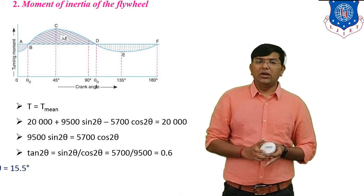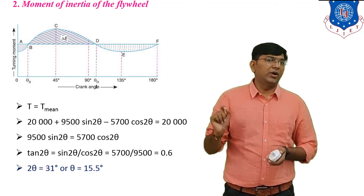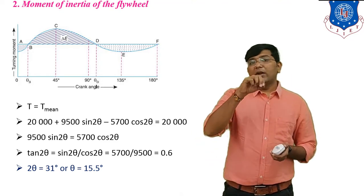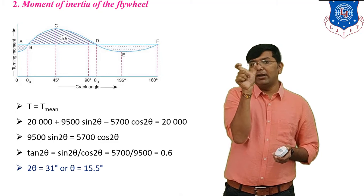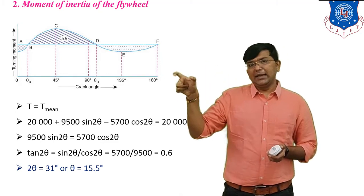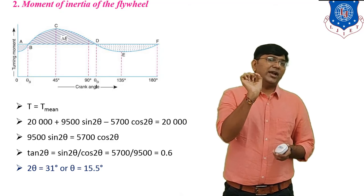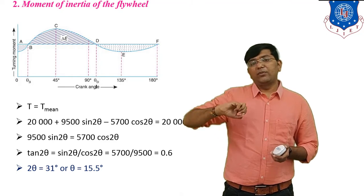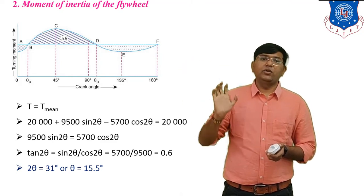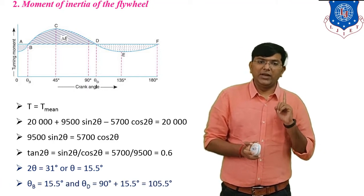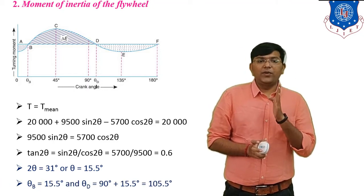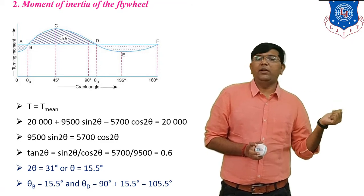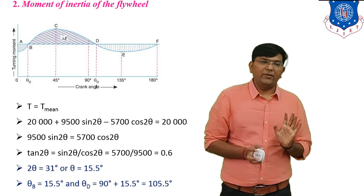Using the inverse, 2θ equals 31 degrees, so theta equals 15.5 degrees. The duration of the cycle is 180 degrees — 90 degrees for the positive loop and 90 degrees for the negative loop. So the first intersection point B is at θB equals 15.5 degrees. For the second intersection point D, add 90 degrees: θD equals 90 plus 15.5 equals 105.5 degrees.